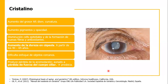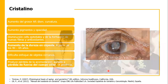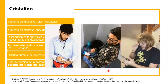El cristalino tiene un gran poder refractivo que sirve para acomodación, tanto para visión cercana como lejana. Al endurecerse el cristalino y el cuerpo ciliar, que es quien mueve la zónula para que se abombe o se aplane, ya no va a tener esta función. Por lo tanto, al paciente se le va a dificultar el enfoque de objetos cercanos y se alejan los objetos. Es tan común que vemos imágenes de personas mayores alejando el celular para poder leer.